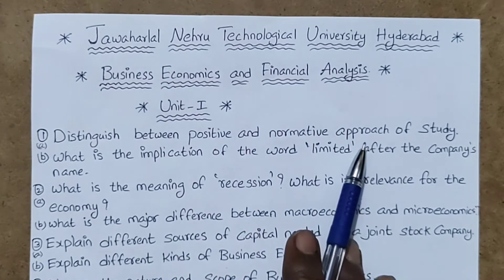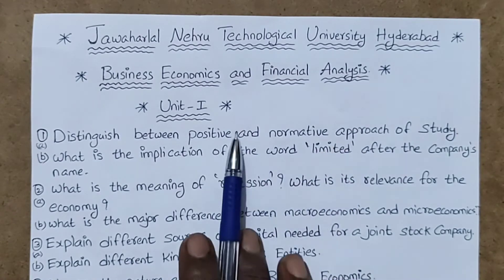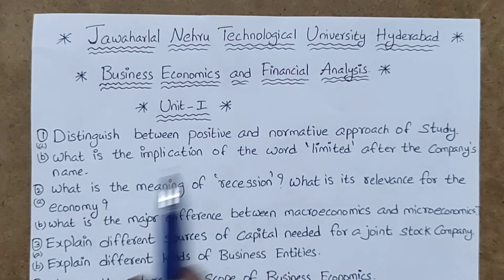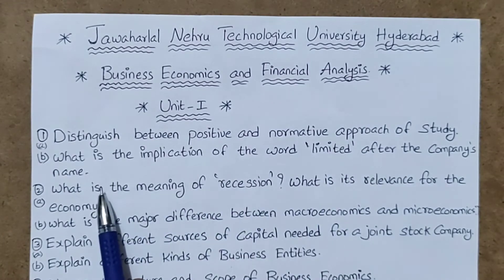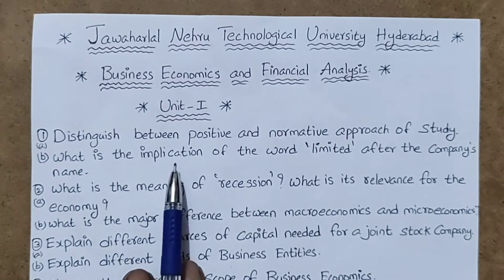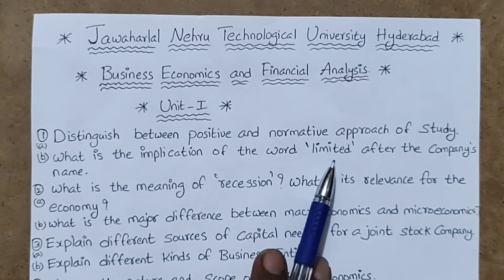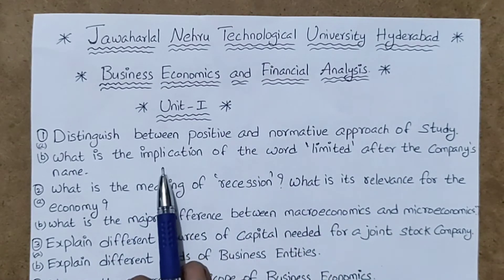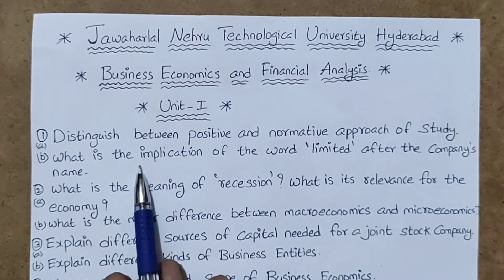Write the headings of the positive and normative approach and write the different points coming under both categories. Next, what is the implication of the word 'limited' after the company's name? Limited means — we know public limited company, private limited company — limited refers to responsibility, like a form of security. All these things you can add in this question. This may come for 7 marks and this may come for 8 marks.